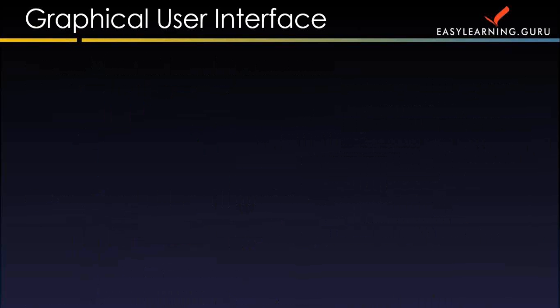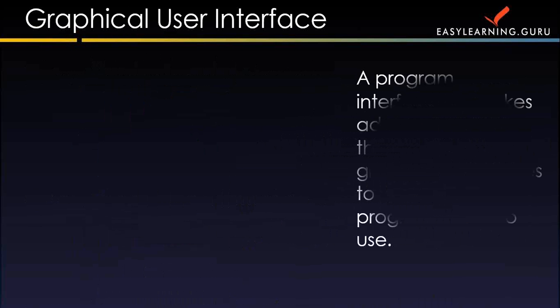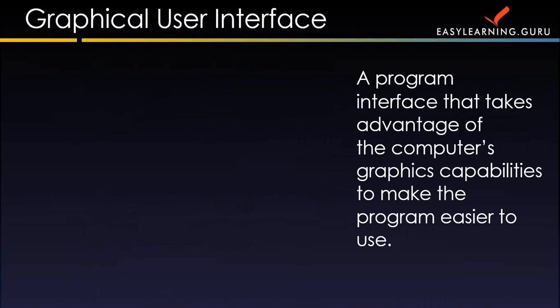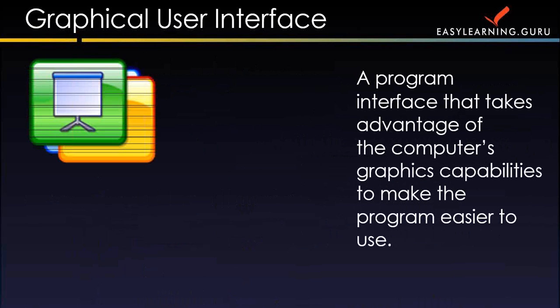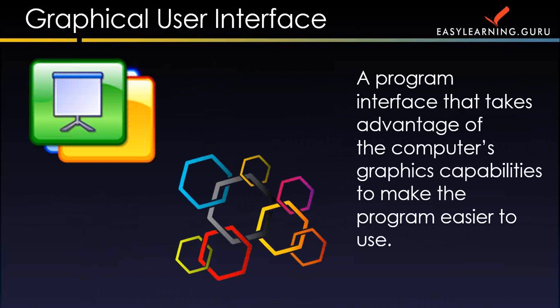Next, you need to know about the graphical user interface. A graphical user interface is nothing sophisticated — it is just a program interface that takes advantage of the computer's graphic capabilities to make the program easier to use. In simple terms, it's the interface that allows a user to interact with electronic devices through graphical icons and visual indicators. Actions in the GUI are usually performed through direct manipulation of graphic elements, and a well-designed GUI can free the user from learning complex command languages.